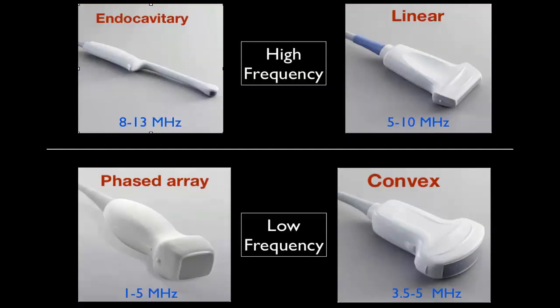We have high-frequency and low-frequency probes. The transvaginal and linear probes are both high-frequency, giving good resolution, but the downside is they do not provide deeper penetration into tissues. The phased array and convex probes are both low-frequency, excellent for deeper structures because of good penetration, but they will not give a higher resolution image for superficial structures.